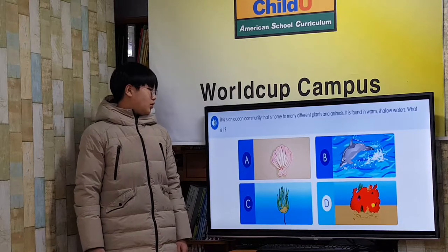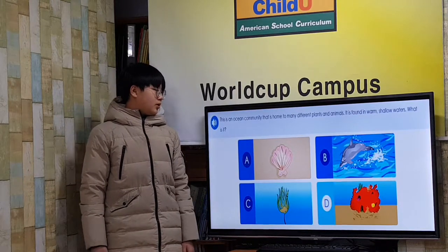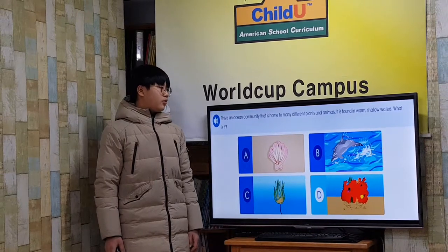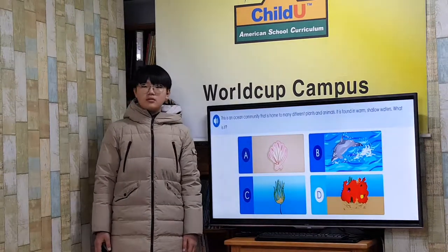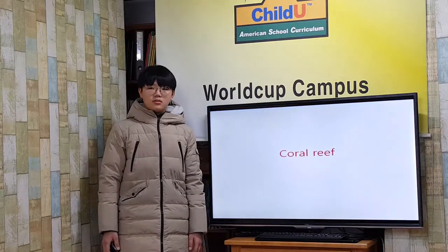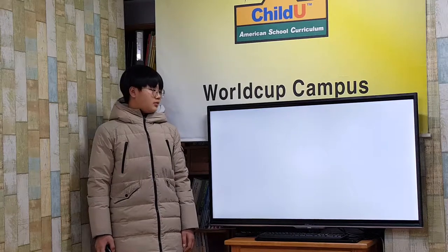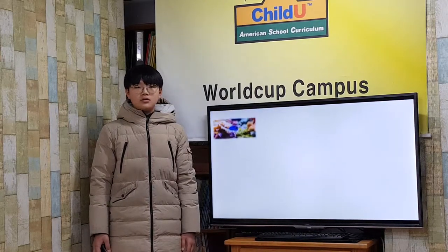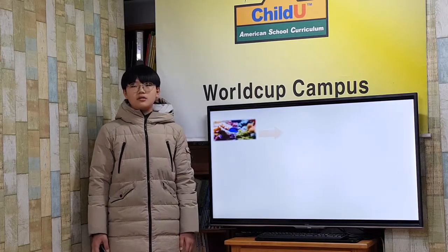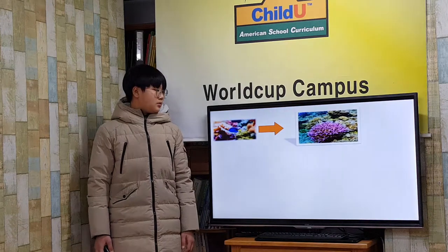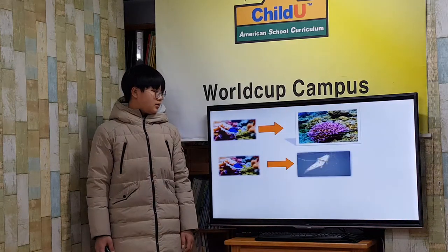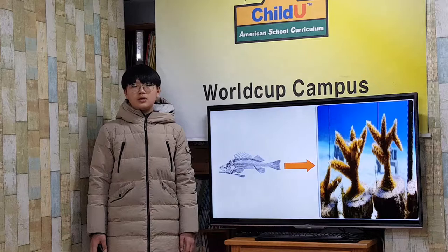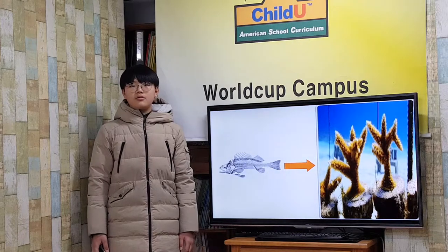This is a local community made up of many different plants and animals. It is found in shallow waters. What is it? Coral reef! Plenty of sea creatures make coral reefs. They build rocky skeletons around themselves, and when they die, they leave their skeletons behind — coral reef.